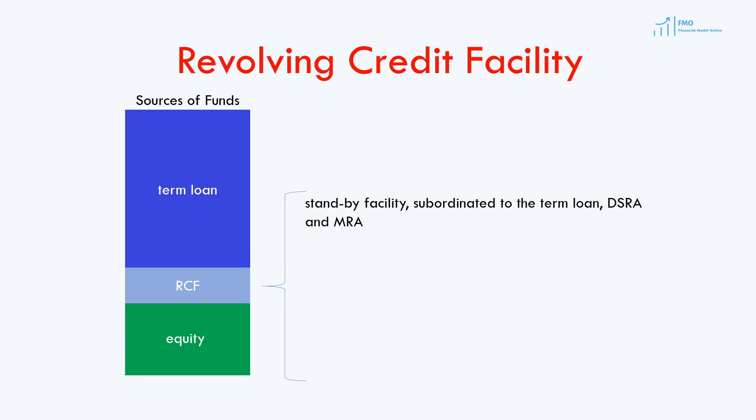Revolver typically has an established maximum amount, where the project has access to the funds at any time when needed. This type of loan is mostly used for operating purposes to cover unexpected shortfalls in the cash flows.